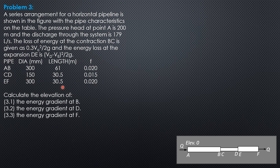The table gives properties for pipes A, B, C, D, E, and F — including diameter, length, and friction factor. We are asked to calculate the elevation of the energy gradient at D and at F, so let's draw the energy grade line.